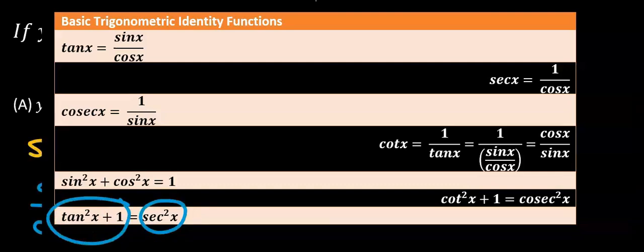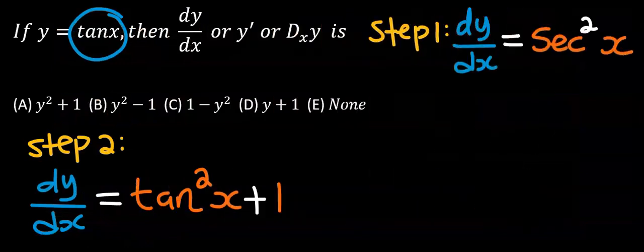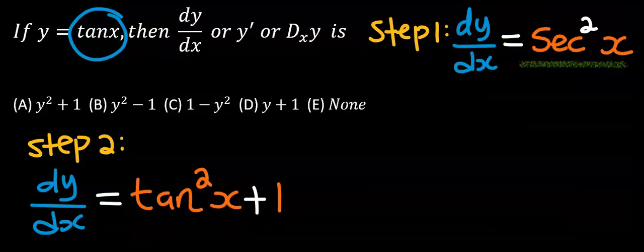Next, in step number two, instead of writing sec²x for my dy/dx, I can replace it now with tan²x + 1, which I got from the basic trigonometric identity functions table.